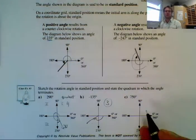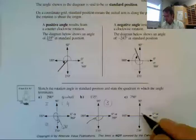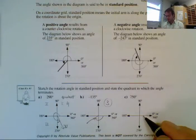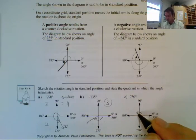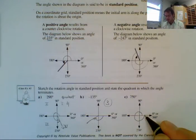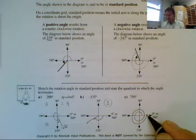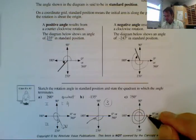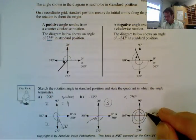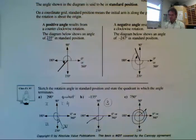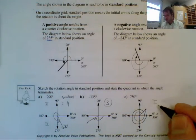Now we look at the next one. We have 750, so I'm going to have to go from 0 to 750. As it's positive, we're going to start going in a counterclockwise rotation. We go once — that's 360. I go twice — it's going to be 720 — and then only 30 more degrees, so it's not going to quite reach 90. So it's going to be around there, and that gives me all the way to quadrant number 1.